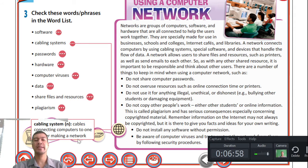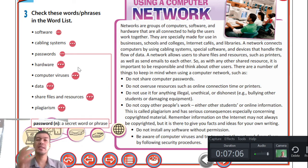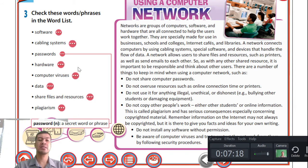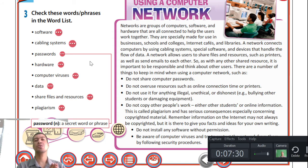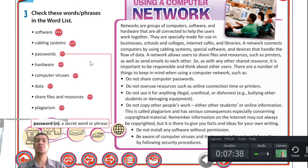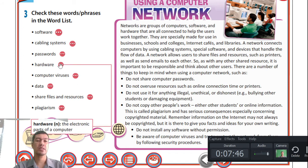Passwords: these are things you cannot touch physically, but you can use them to secure and protect your information — a secret word or phrase. Hardware: the things you can touch. If you look at your desktop, you can touch your screen, your printer, your mouse — anything physically connected to your computer forms part of the hardware. So hardware = things you can touch; software = things you cannot touch.